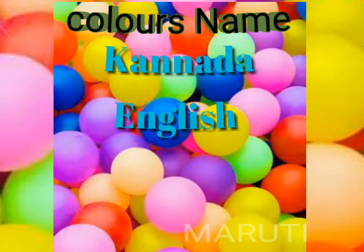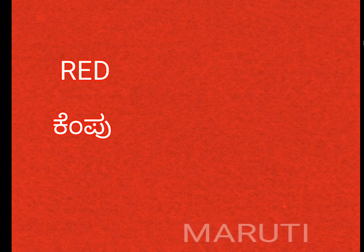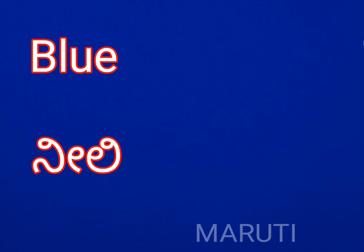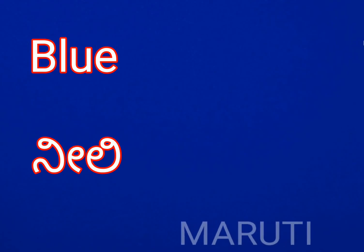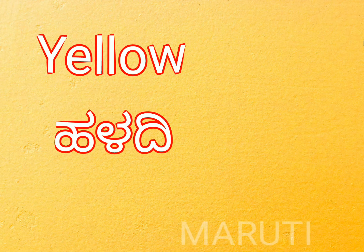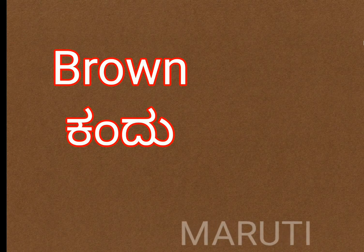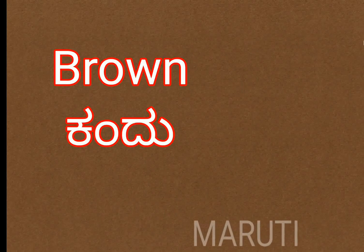Colors in Kannada and English: Red — Kjemppu. Blue — Neelie. Pink — Gulabi. Yellow — Haldi. Brown — Kandu.